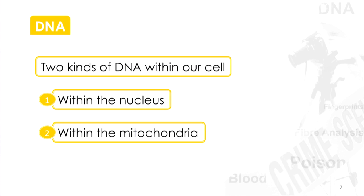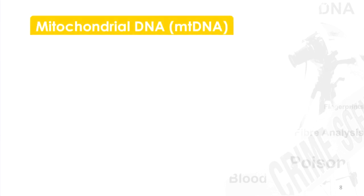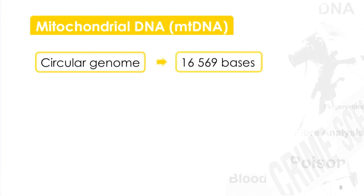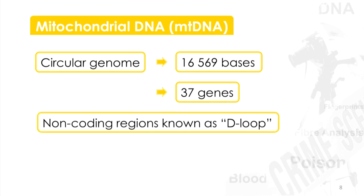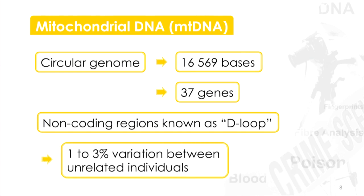The nuclear DNA is a long chain. The mitochondrial DNA is circular. It has 16,569 bases organized into 37 genes. It does have non-coding regions, and they do exhibit the kind of variation you need to distinguish individuals.